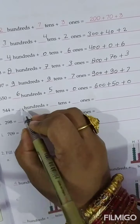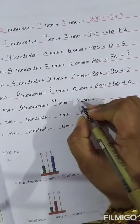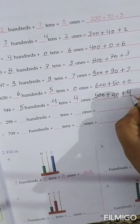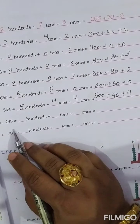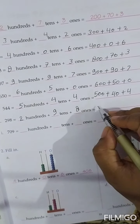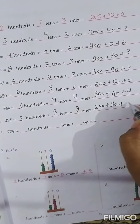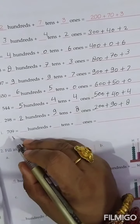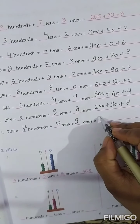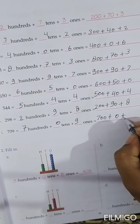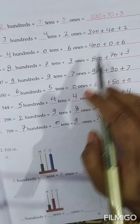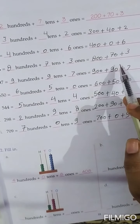544. In the 100's place: 5. In the 10's place: 4. In the 1's place: 4. So, 500 plus 40 plus 4. Next, 298. In the 100's place: 2. In the 10's place: 9. So, 200 plus 90 plus 8. Next, 709. In the 100's place: 7. In the 10's place: 0. In the 1's place: 9. So, 700 plus 0 plus 9. This is the expanded form of numbers and this one is the short form of numbers.